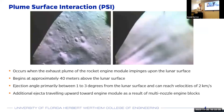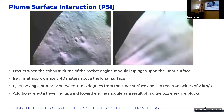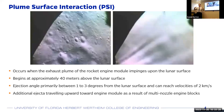These particles are kicked up during plume surface interaction, or PSI. This is a phenomenon where the high-velocity, high-temperature plume of a rocket engine impinges upon the lunar surface, causing dust kickup. Based on previous lunar missions, this phenomenon tends to occur around 40 meters above the lunar surface. However, this also increases exponentially as you approach the surface, as the impingement area and exhaust velocity increases.